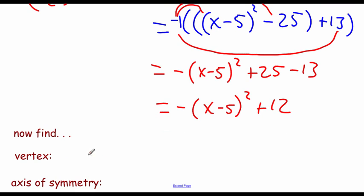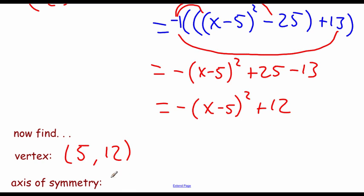Finding the vertex, we grab the h value and k value. The h value — remember, sign change — it was negative 5, so we make it positive 5. The k value of 12 stays the same. Writing out the equation for the axis of symmetry, we get x equals 5. Please remember to fill out the Google form linked in the description down below — thanks for watching!